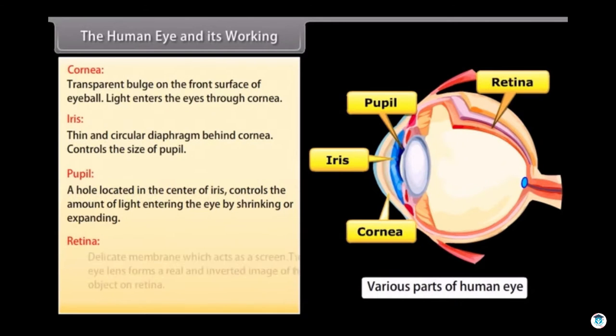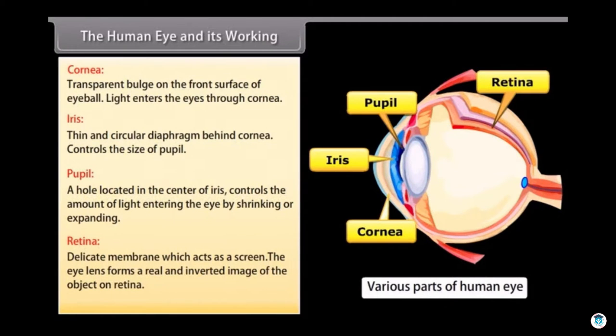Retina: It is a delicate membrane which acts as a screen. The eye lens forms a real and inverted image of the object on retina.